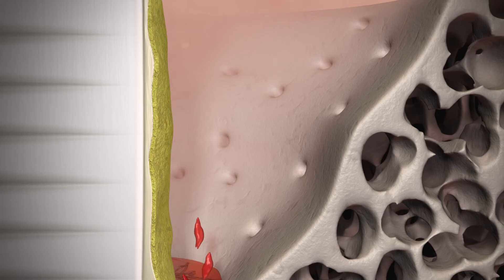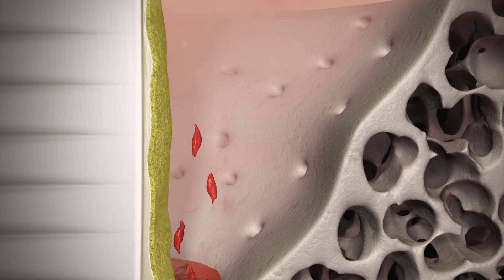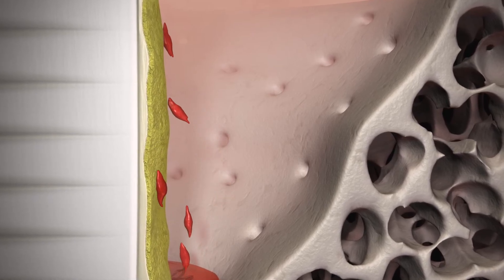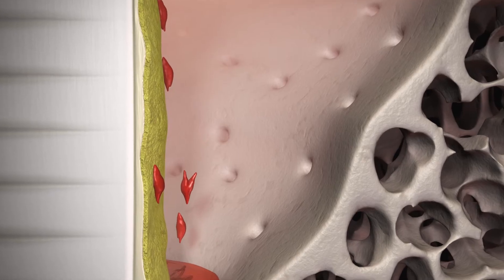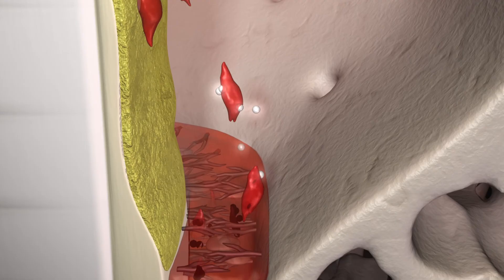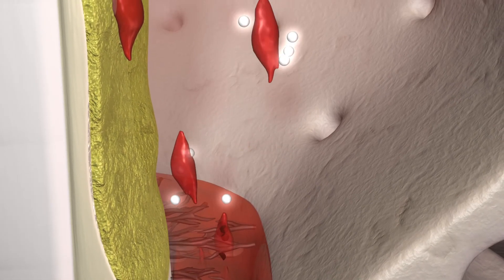The matrix layer of Straumann Emdogene now stimulates the induction and proliferation of mesenchymal cells from the healthy part of the periodontal ligament. The cells secrete natural and specific cytokines and autocrine substances which promote the required proliferation.